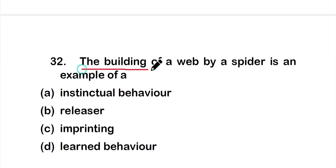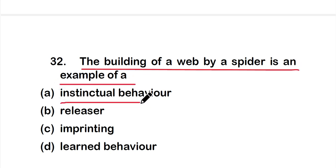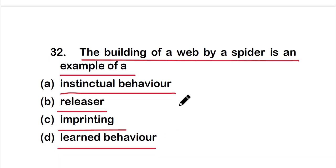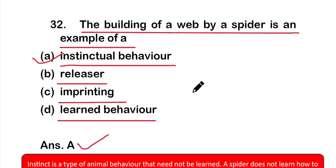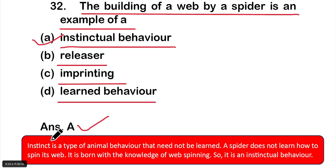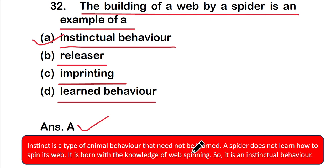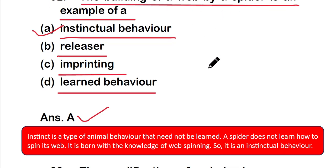Question number 32: The building of a web by a spider is an example of — option A: instinctual behavior, option B: releaser, option C: imprinting, or option D: learned behavior. The correct answer is option A — instinctual behavior. Instinct is a type of animal behavior that need not be learned; a spider is born with the knowledge of web spinning, making it an instinctual behavior.